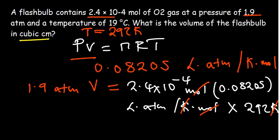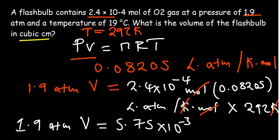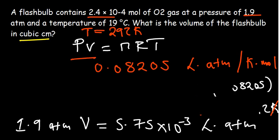The answer I'm getting is 5.75, so we have 1.9 atm. We have to divide by the 1.9 atm remaining on our left hand side so that we just remain with the volume as per requirement.